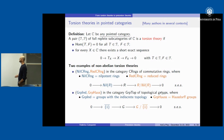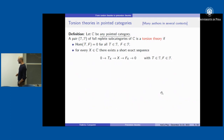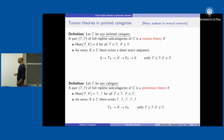The second example is in the category of topological groups, where we have the groups with the discrete topology as the torsion part and the Hausdorff groups as the torsion-free part.